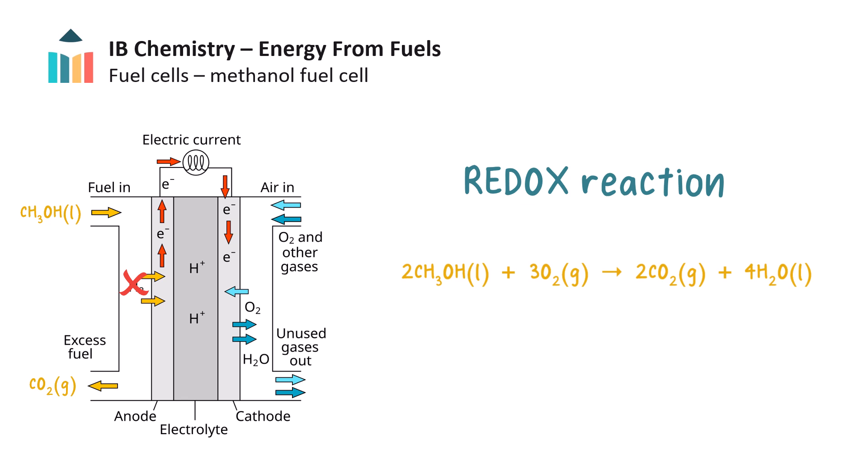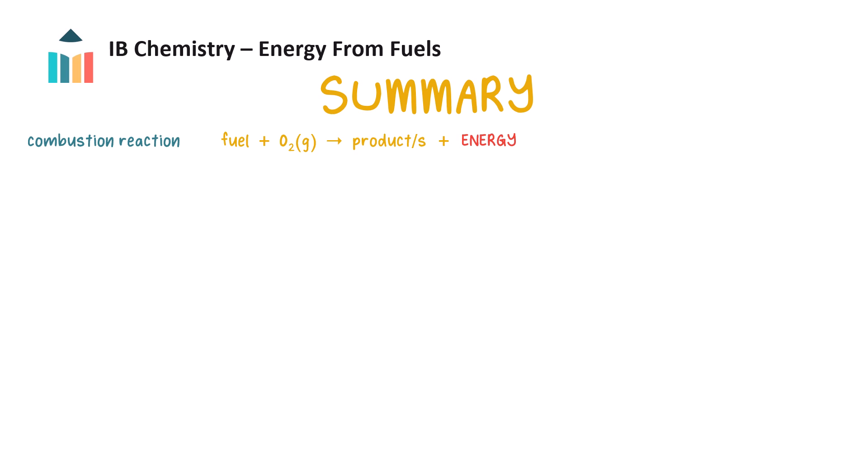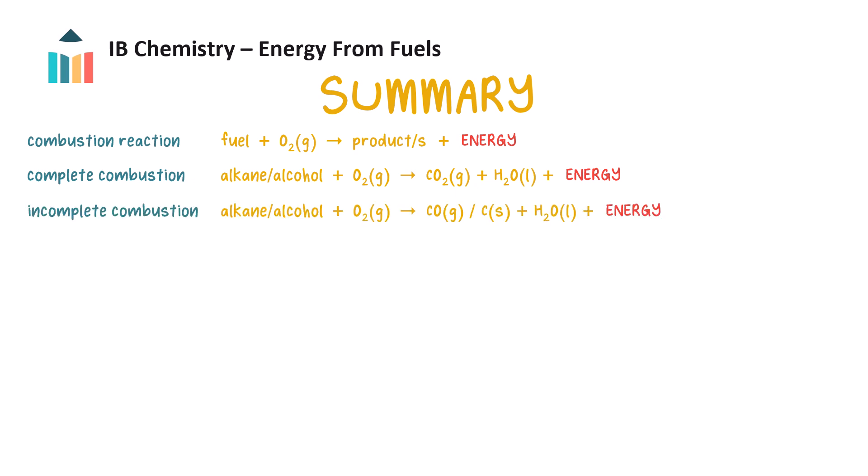It's time to summarize what we've learned. Combustion reactions are exothermic reactions which occur when a fuel reacts with oxygen. During complete combustion of alkanes or alcohols, sufficient oxygen gas is present to convert the fuel to carbon dioxide and water, and lots of thermal energy. During incomplete combustion, insufficient oxygen is present, and the products are carbon monoxide and/or carbon as soot and water, and slightly less thermal energy.